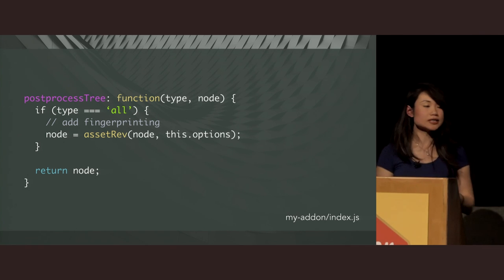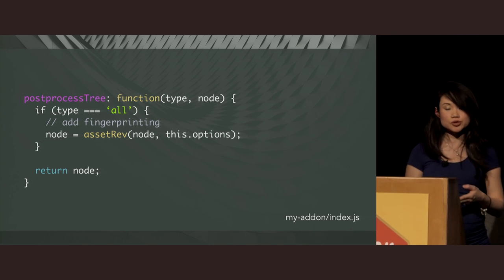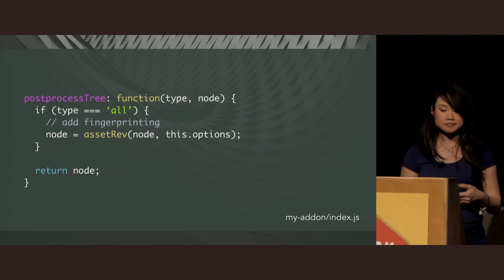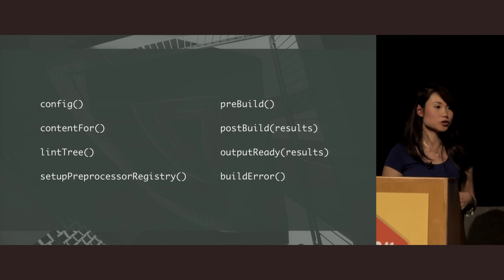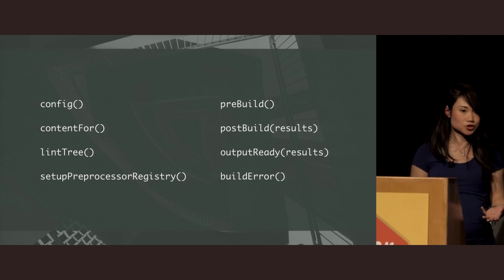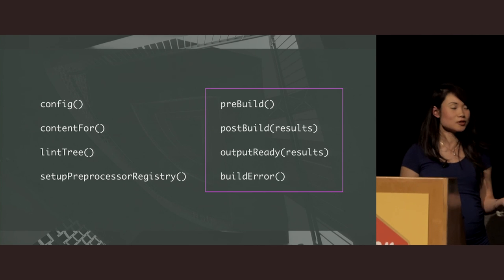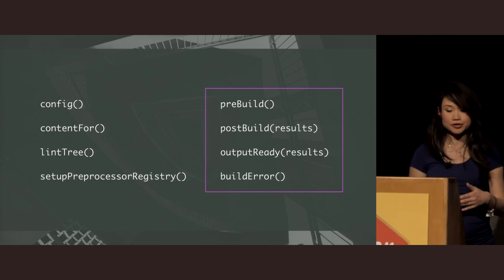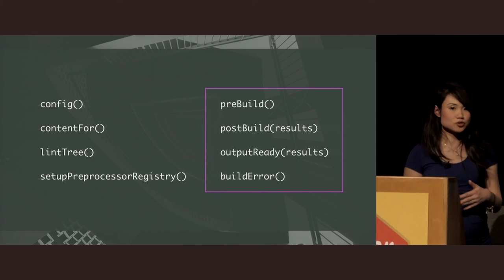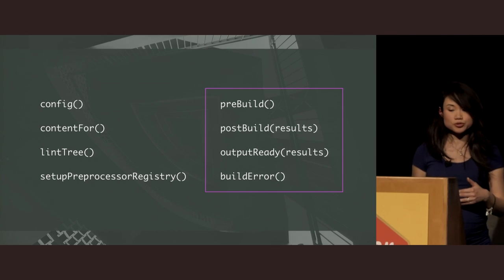To illustrate this, the broccoli-asset-rev add-on that handles fingerprinting uses this hook to append checksums to file names at the end of a production build. There are also more hooks than I could cover in this talk. The ones I showed you dealt directly with modifying a broccoli build definition. There are others that don't alter the graph but still participate in the lifecycle of a build — those are pre-build, post-build, output-ready, and build-error. They're simple enough to understand since they don't actually interact with broccoli, so I encourage you to go explore those on your own.